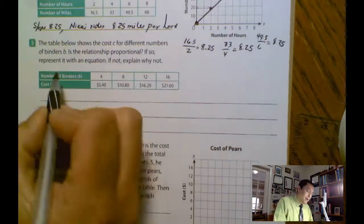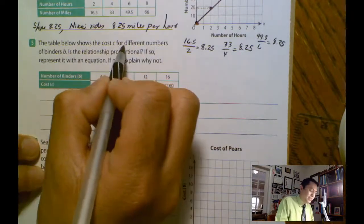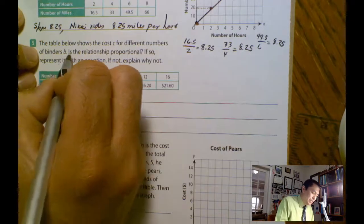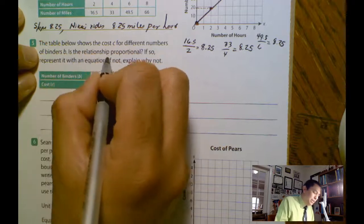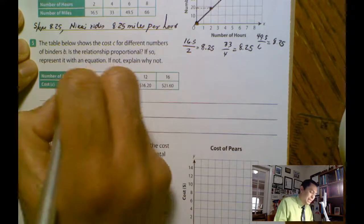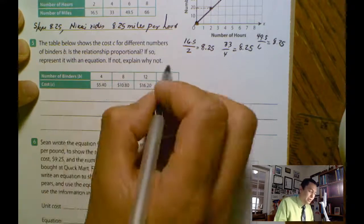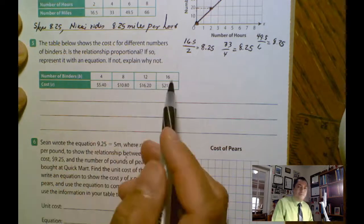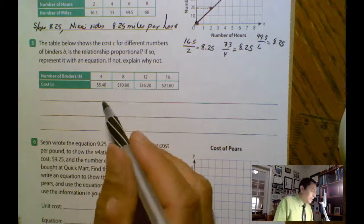Problem number five, the table below shows the cost C for different numbers of binders, B. Is the relationship proportional? That's the question. If so, represent it with an equation. If not, explain why not. So we have the table. Again, we do the division.